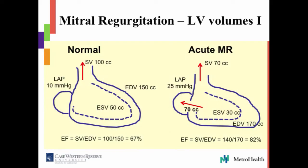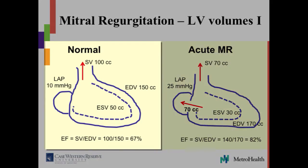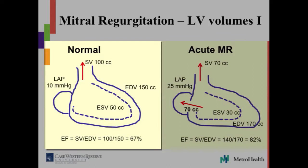Let's talk about volumes. This is the normal heart: end-diastolic volume 150, end-systolic volume 50, stroke volume is 150 minus 50 equals 100. Because the mitral valve is competent, all 100 cc's of stroke volume go out into the aorta. The ejection fraction is stroke volume divided by end-diastolic volume: 100 divided by 150 is 67%.